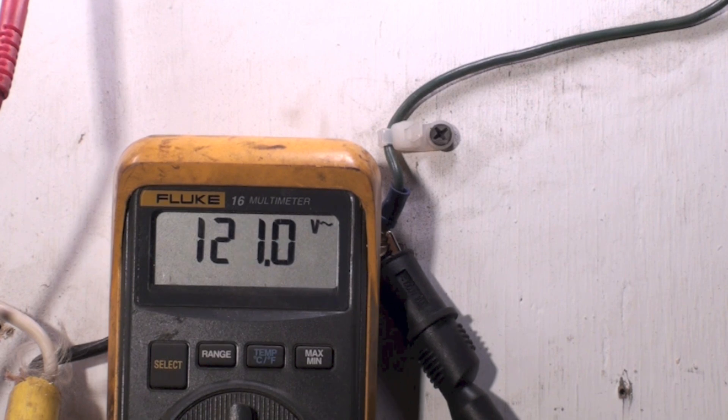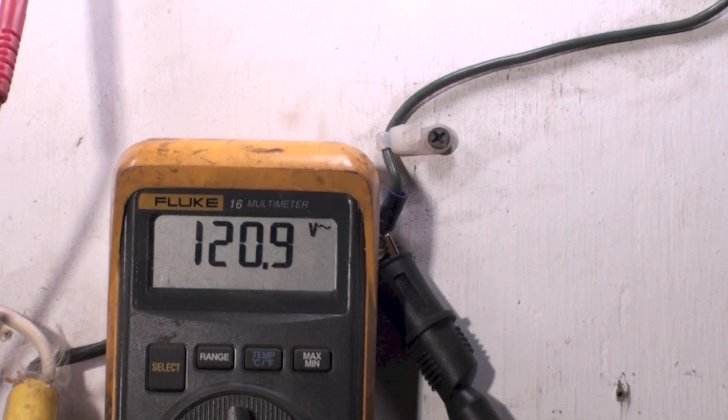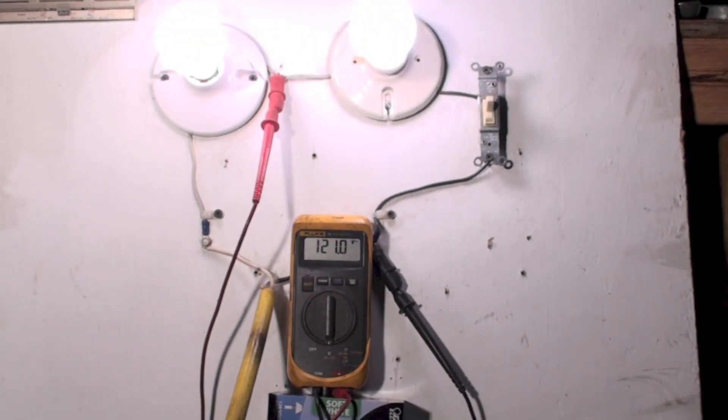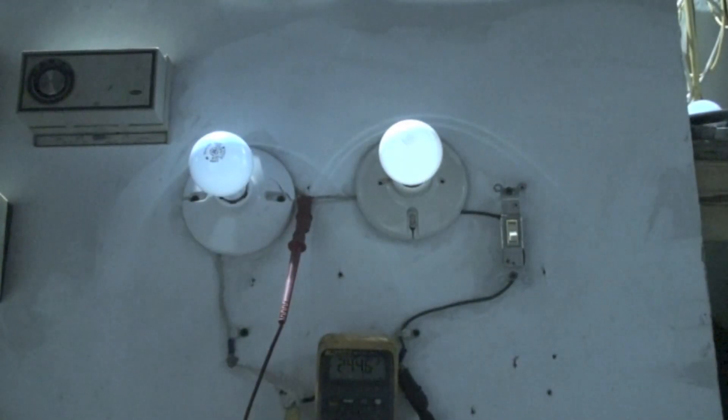So now what we're gonna do is we're gonna put different loads in there. I'm gonna put a 60 watt light bulb in the right and leave the 75 on the left. Now I've turned them on.